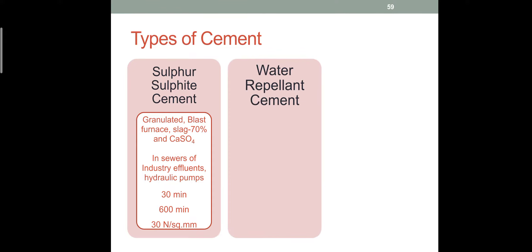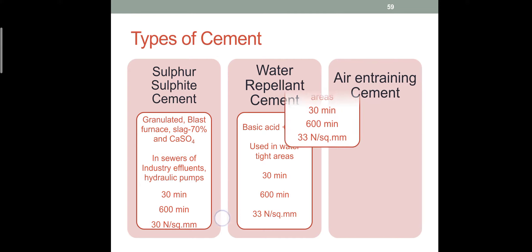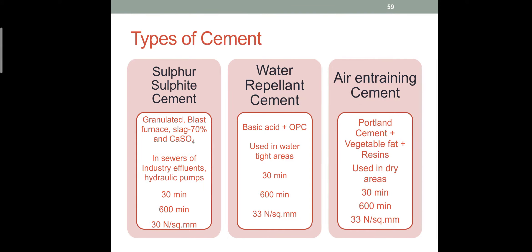The next cement is water repellent cement. As the name indicates, it is a waterproof cement. We can use it in swimming pool bases, water sewage lines, and similar applications. It is made with normal cement but has more acid content. It is used for water-tight areas. Strength is approximately 33 N/mm².